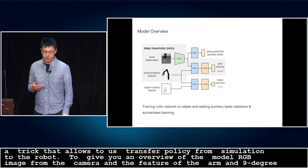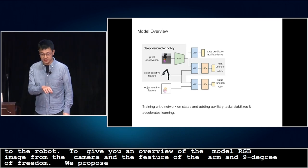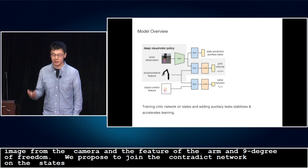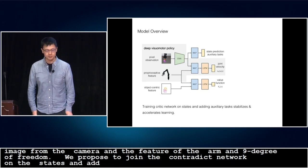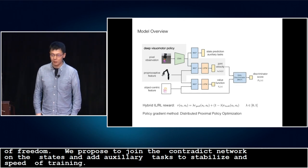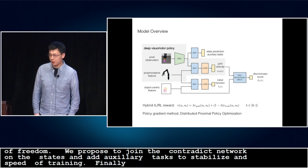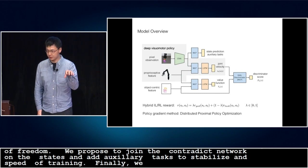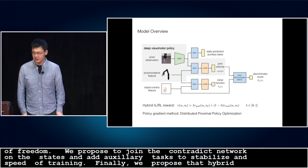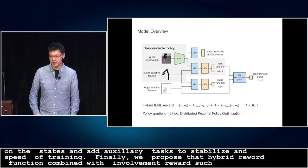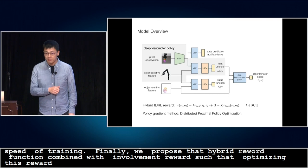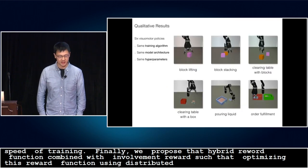We propose to train the critic network on physical states in simulation, and also add auxiliary tasks to stabilize and speed up training. We propose a hybrid reward function that combines the imitation reward with the environment reward, such that by optimizing this hybrid reward function using a distributed policy gradient method, we are essentially doing reinforcement learning and imitation learning simultaneously.